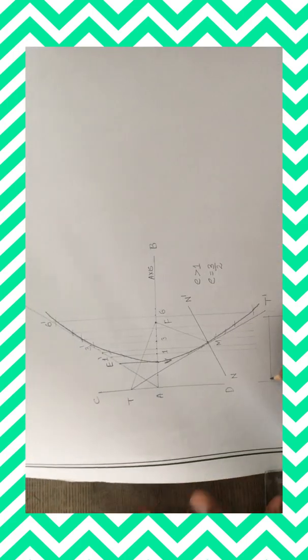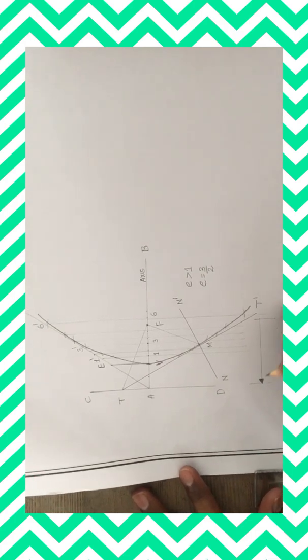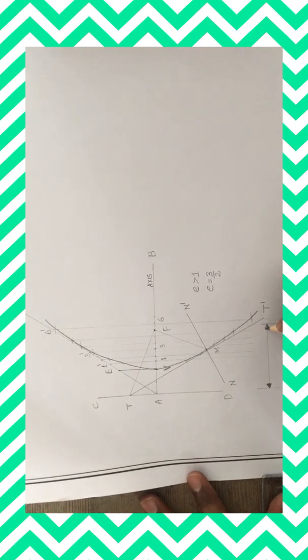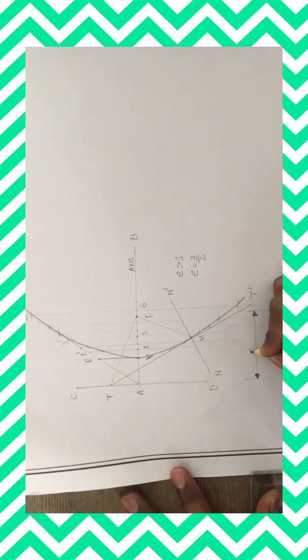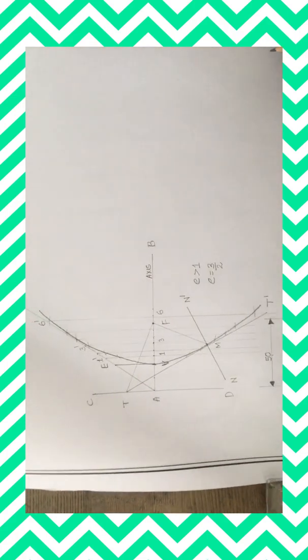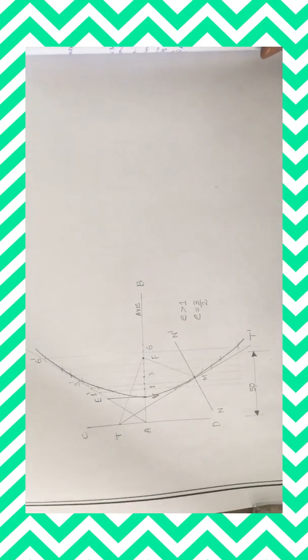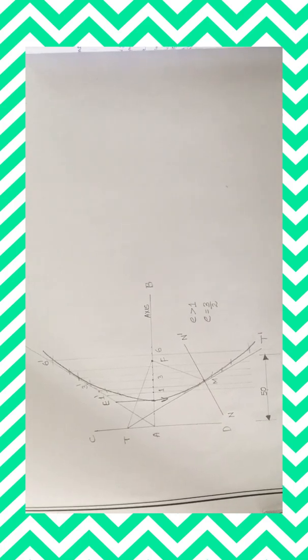Whatever numerical values are given in the problem, focus on them and furnish all details. Draw arrowheads neatly, and write dimension values above the dimension line, centered, only in HB pencil. Do not forget to write the title 'Construction of Hyperbola' either above or below. Dear students, I hope you understood how to draw the construction of a hyperbola curve using the eccentricity method. Please like, share, and comment in the comment box if you are looking for any other concepts. Thank you.